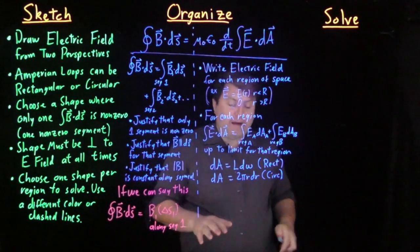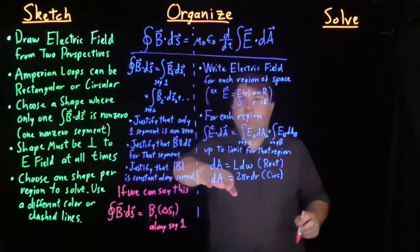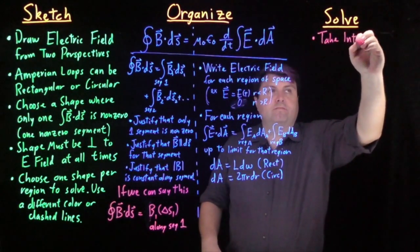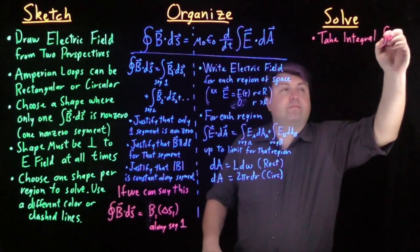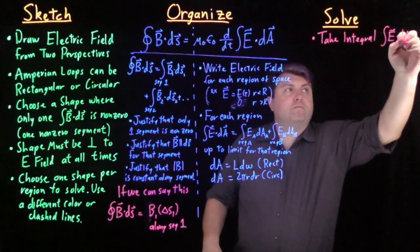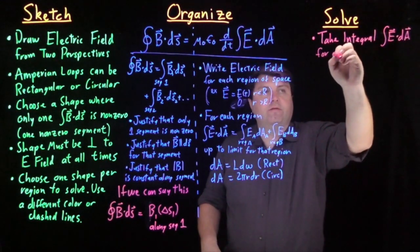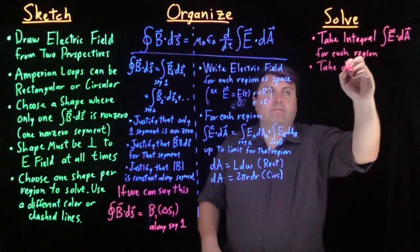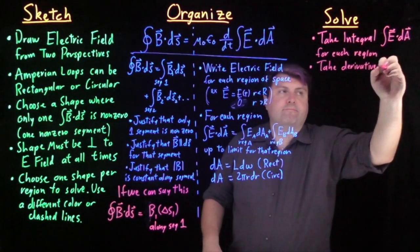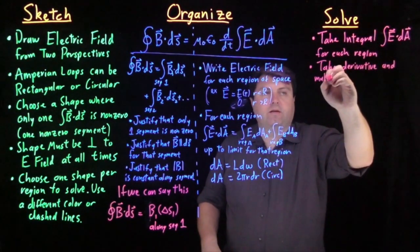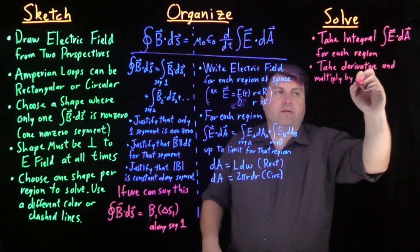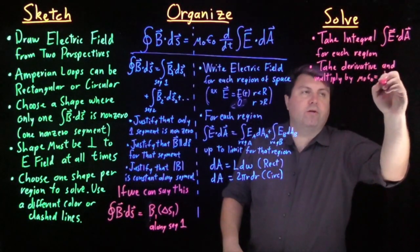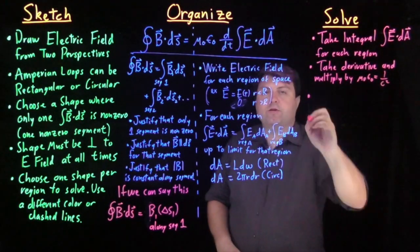So once we have this, then in our solve step, we've set all of this up and we want to then take the integral of E·dA for each region and then we want to take the derivative and multiply by μ₀ε₀, which as we can discover, μ₀ε₀ is equal to also 1 over the speed of light squared.